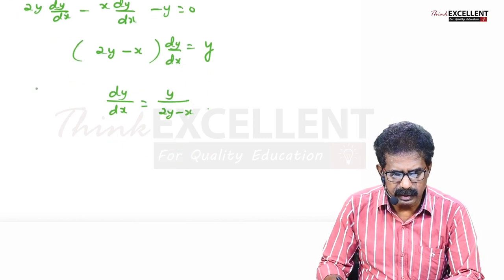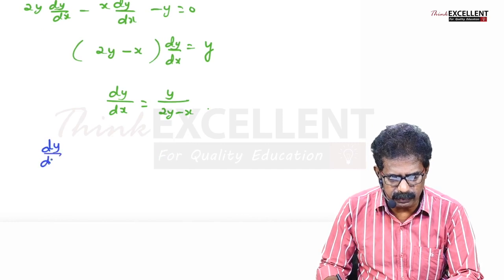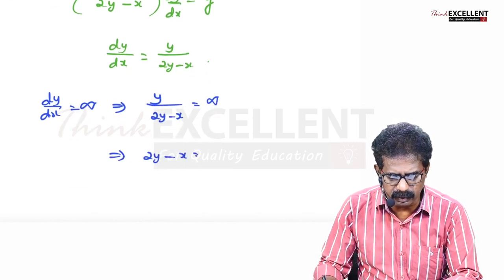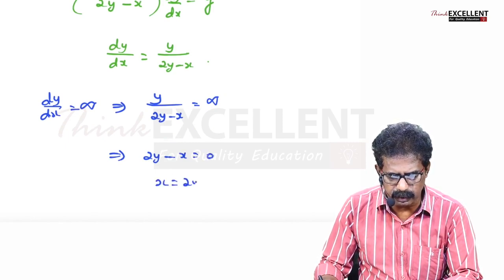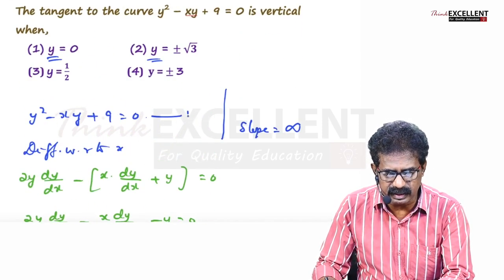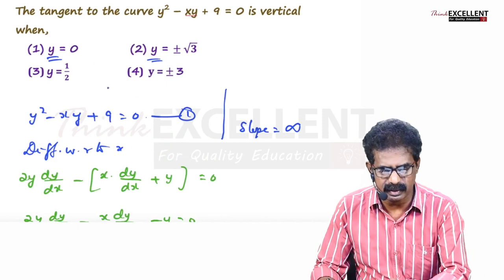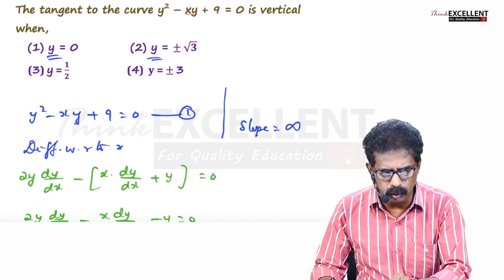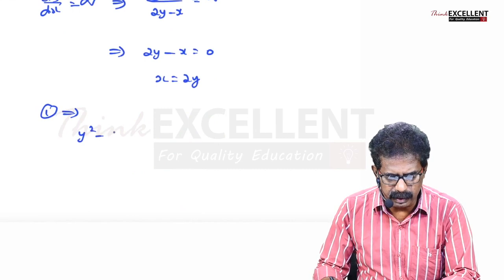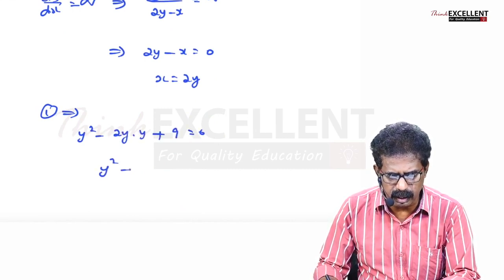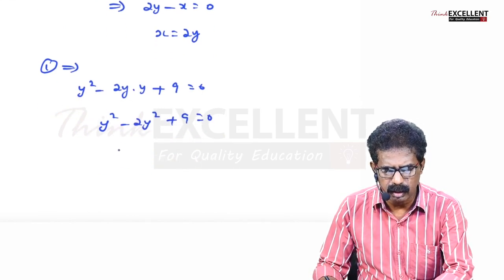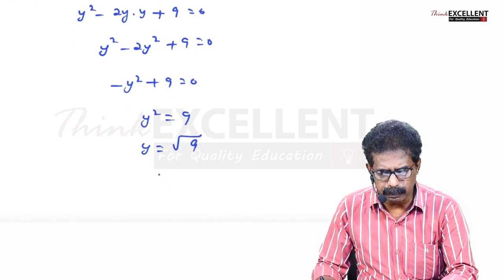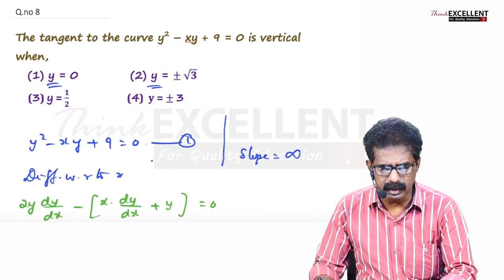For the tangent to be vertical, dy/dx = infinity, so the denominator 2y − x = 0, meaning x = 2y. Substituting x = 2y into the curve equation: y² − 2y · y + 9 = 0 → y² − 2y² + 9 = 0 → −y² + 9 = 0 → y² = 9, so y = ±3. That is option number 4.